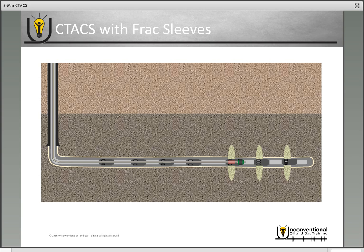One unique feature here is that because you still have that same bottom hole assembly, you have flexibility to add stages during the frack job. If you want to add a stage between the third and fourth frack sleeve, you simply move your coil tubing into position between those, set your packer for isolation, sandjet perforate, and fracture in between those sleeves. It gives you some flexibility to add stages during the frack job.